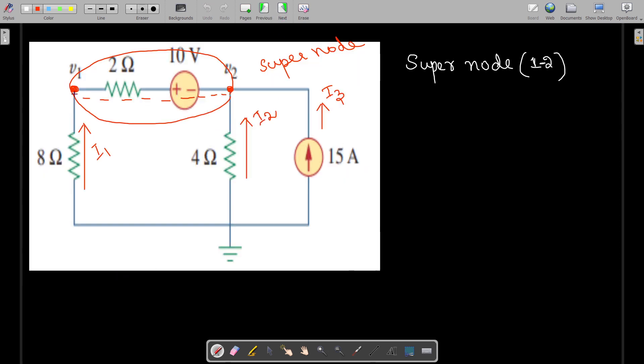Here we have one node, this is another node, and the currents i1, i2, and i3 are flowing. This is our reference node and this 10V source is not connected with the reference node, so this forms a super node.